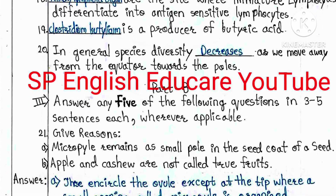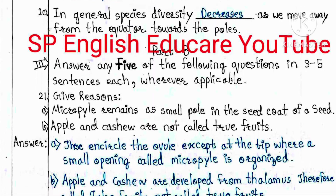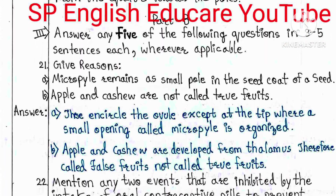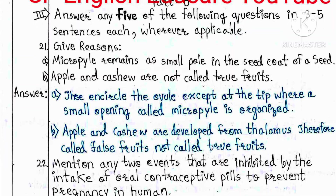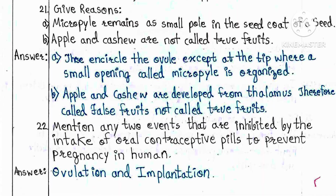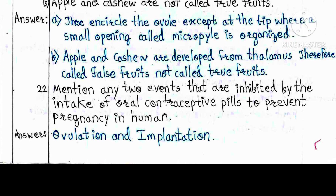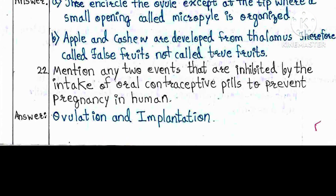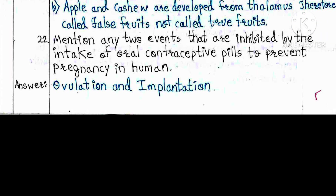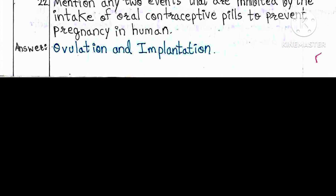Part B, Bit 3: Answer any five of the following questions in three to five sentences each. Q21: Give reasons — A) Micropyle remains a small pore in the seed coat. B) Apple and cashew are not called true fruits. Answer: The integuments encircle the ovule except at the tip where a small opening called the micropyle is formed. Apple and cashew are developed from the thalamus, therefore called false fruits. Q22: Mention any two events inhibited by oral contraceptive pills to prevent pregnancy. Answer: Ovulation and implantation.